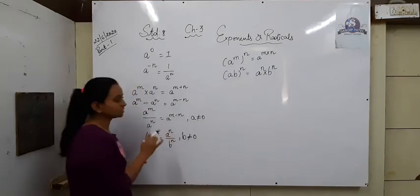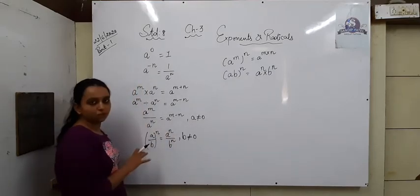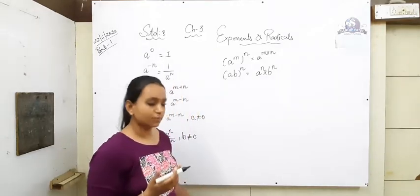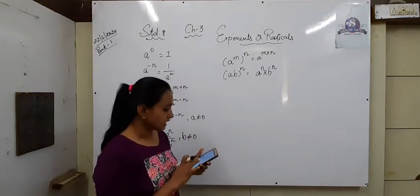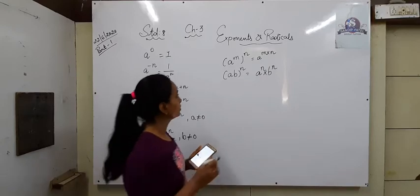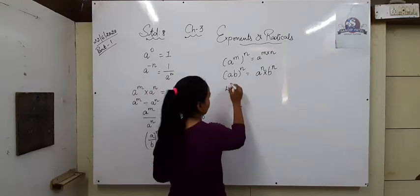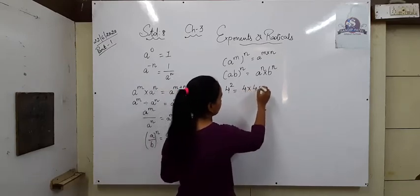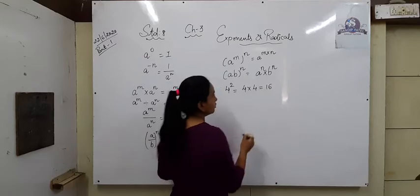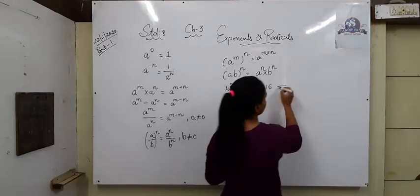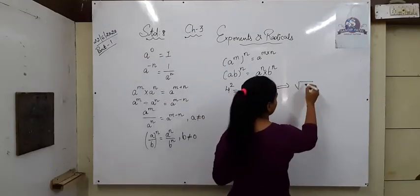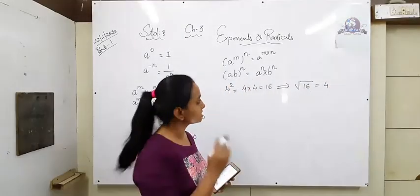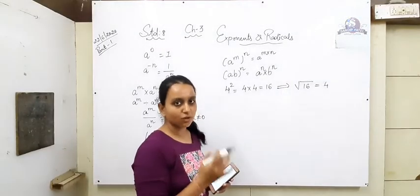Whenever we use exponents and do any operation on numbers, we have to remember these rules and apply them. After that, rational numbers as exponents. Now we already know: four squared means four into four. Four into four is equal to sixteen. Four squared is sixteen. And if we are finding the square root of sixteen, we get four. This is simple — we already know square and square roots.